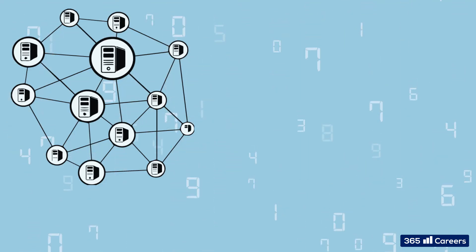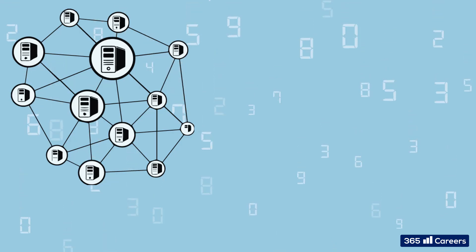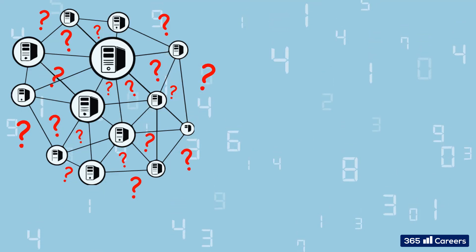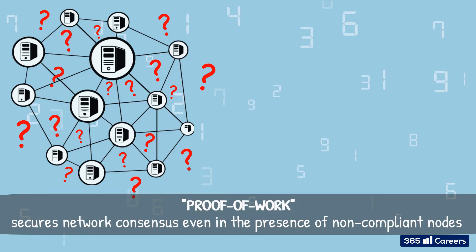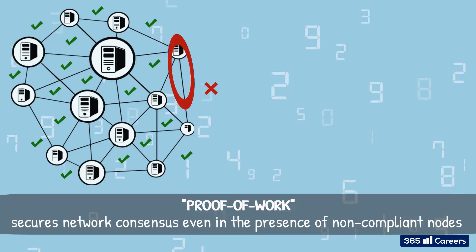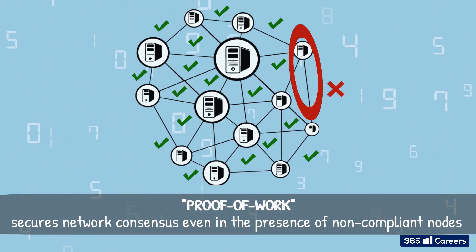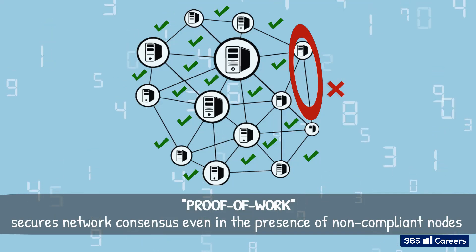In the context of the Byzantine Fault Tolerance Algorithm, the important concept to grasp is that these mining nodes start from the assumption that nobody else on the network can be trusted. Proof-of-work secures network consensus, even in the presence of non-compliant nodes.